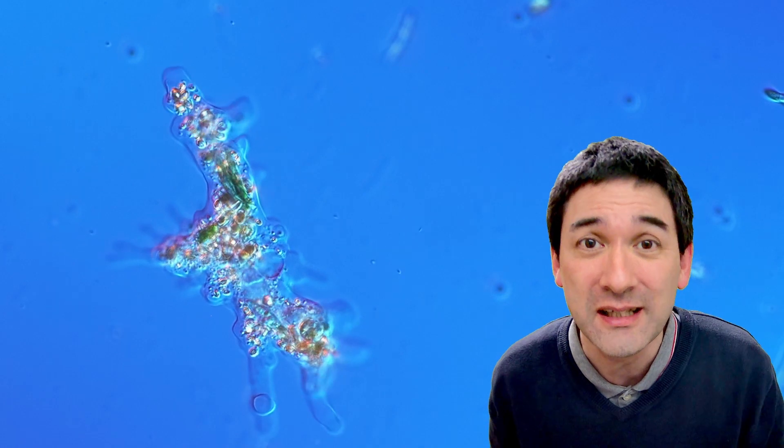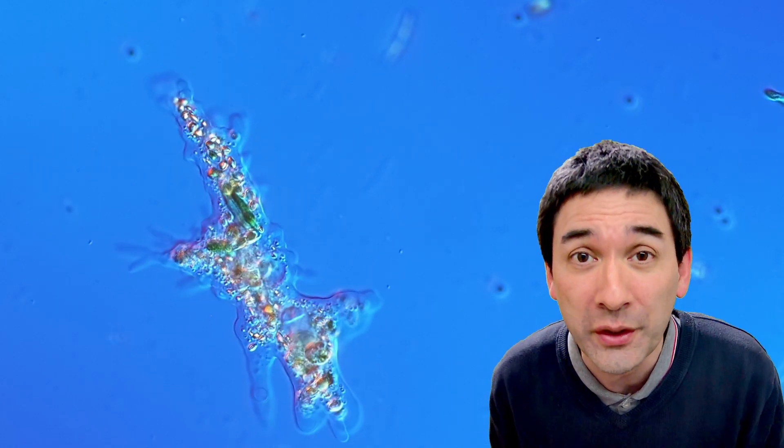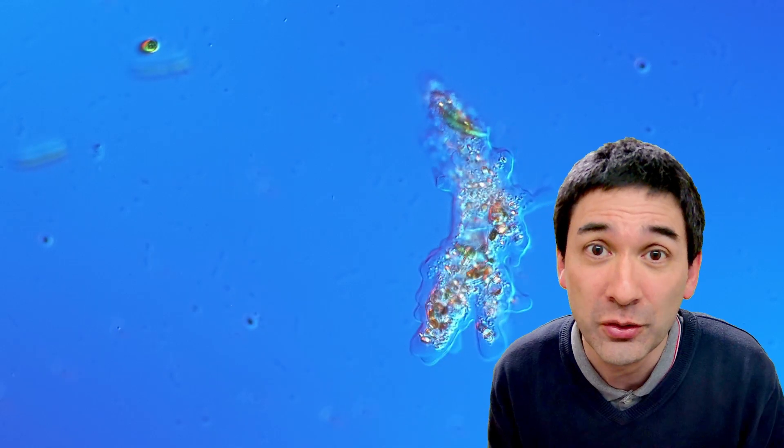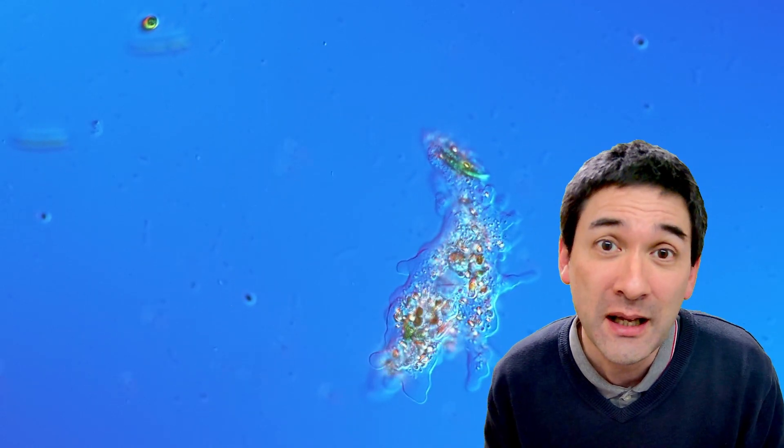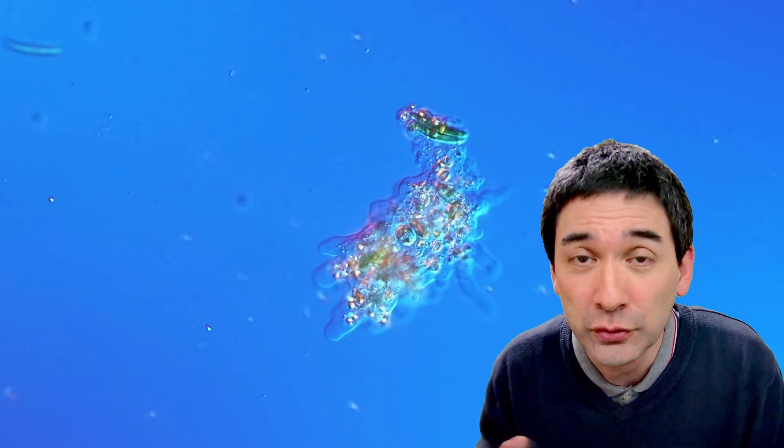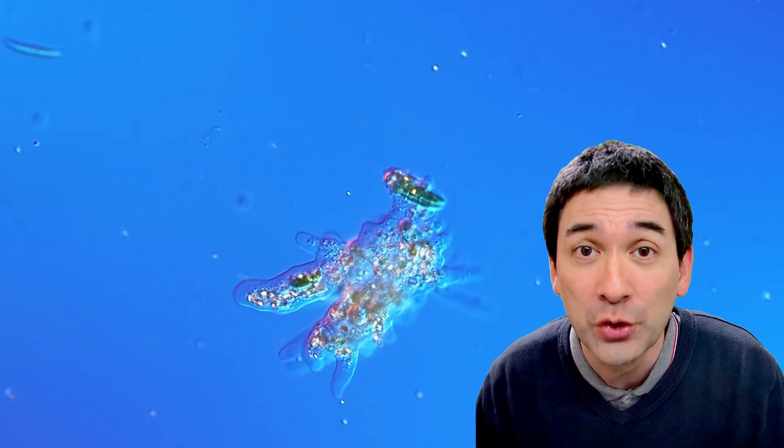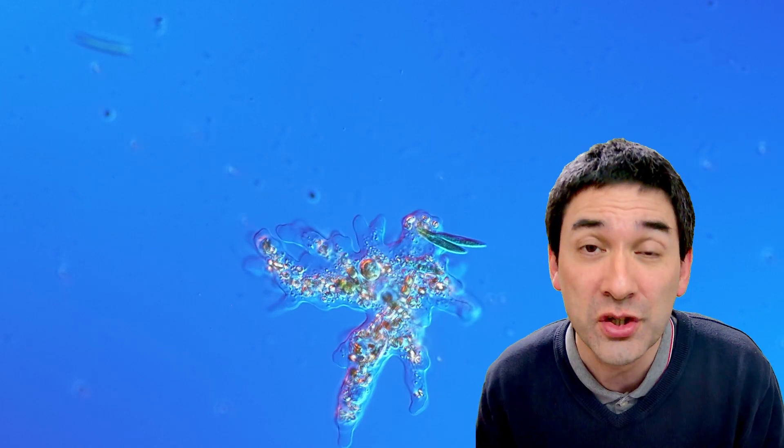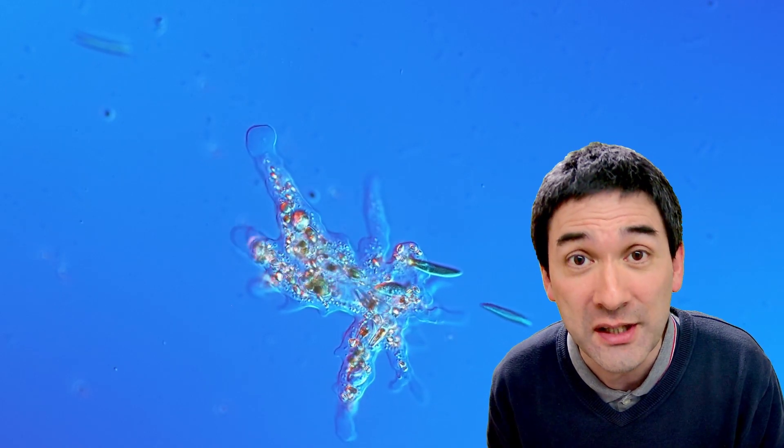Amoeba are single-celled organisms or water organisms that are able to change their shape just like this one over here. You're seeing it right now in time-lapse and what they do is they move around changing their shape and also engulfing other microorganisms as a source of food.